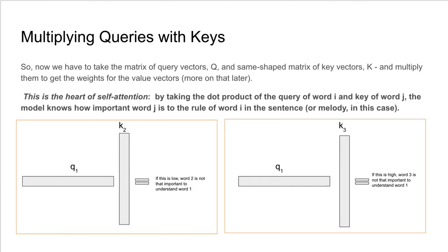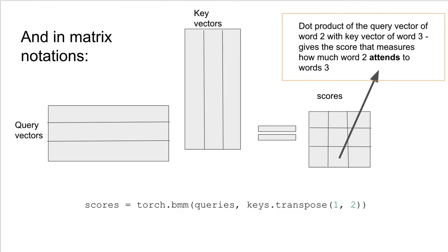Now we have to multiply the queries with the keys. We have to take the matrix of query vectors Q, and same-shaped matrix of key vectors K, and multiply them to get the weights of the value vectors. Now pay attention because this is the heart of self-attention. By taking the dot product of the query of word I and the key of word J, the model knows how important word J is to the role of word I in the sentence, or melody in this case.